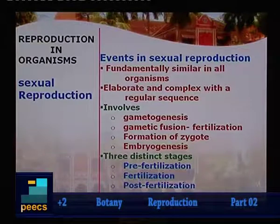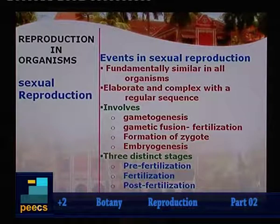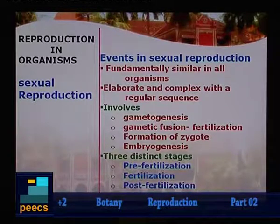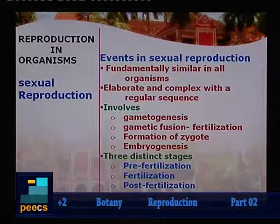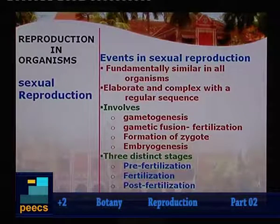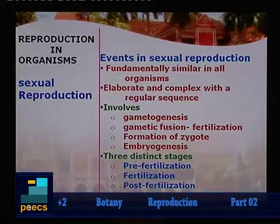The major events in sexual reproduction are fundamentally similar in all organisms — elaborate, sequential and complex. It involves four major components: namely gametogenesis, gametic fusion called fertilization, formation of zygotes, and embryogenesis. This can also be described as three distinct stages: pre-fertilization changes, fertilization changes, and post-fertilization changes.